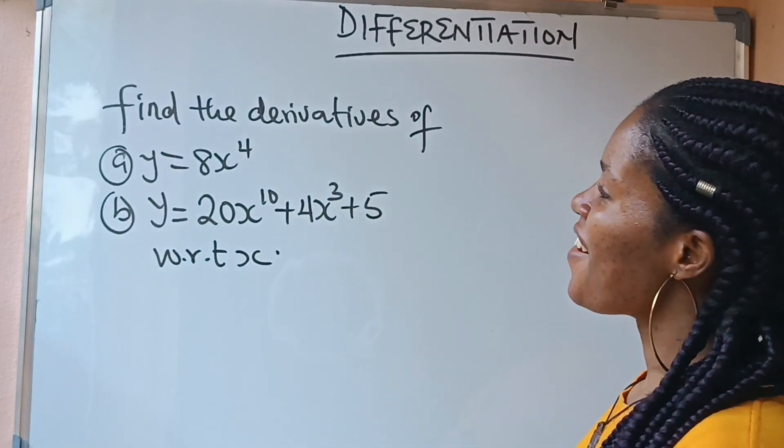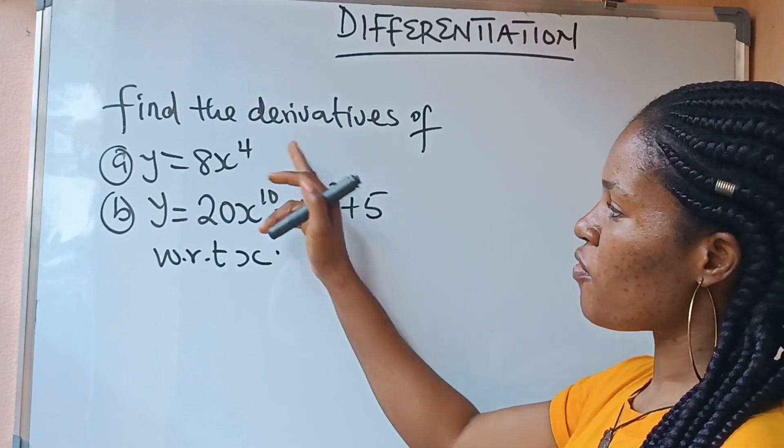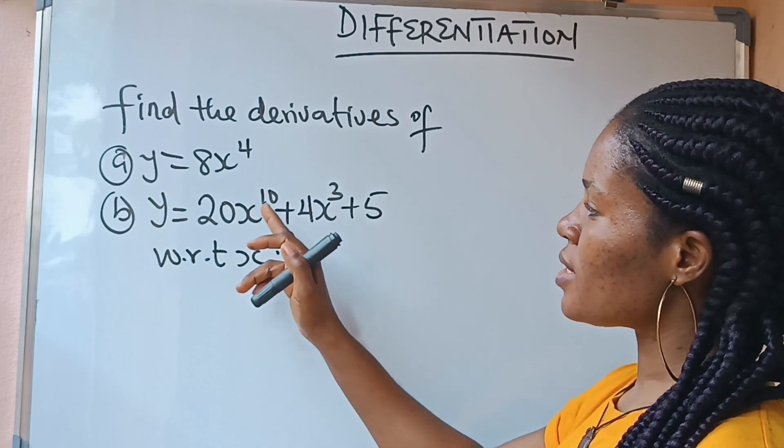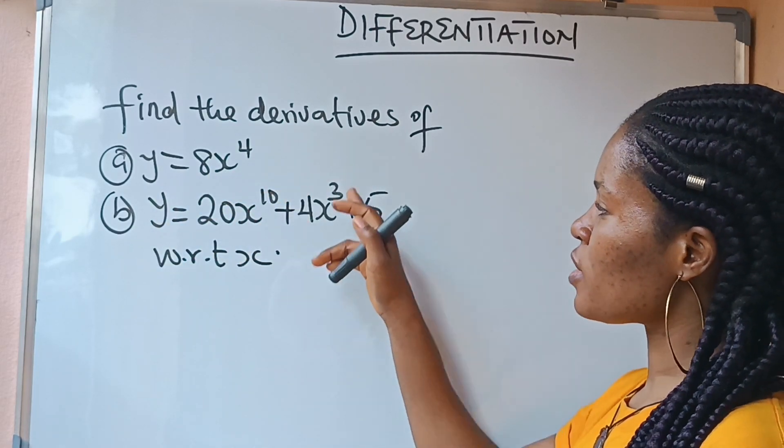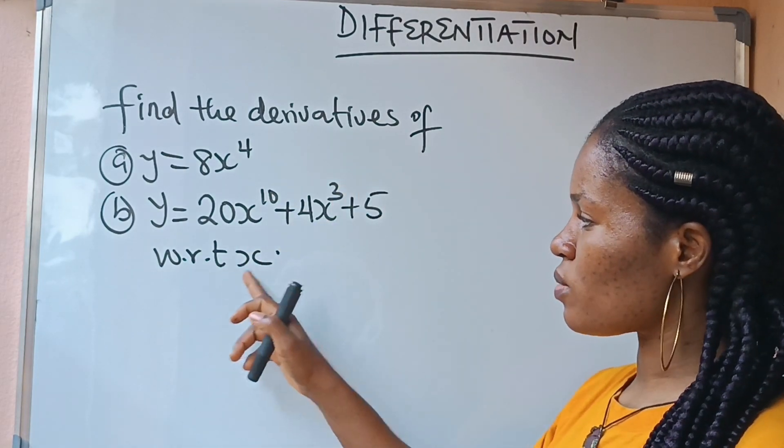Hello ugly fans! We are asked to find the derivatives of y equals 8x raised to the power of 4 and y equals 20x raised to the power of 10 plus 4x raised to the power of 3 plus 5 with respect to x.